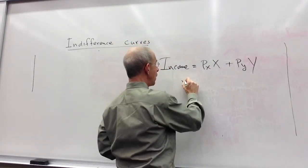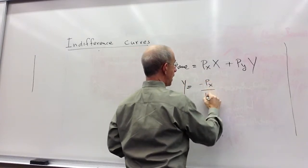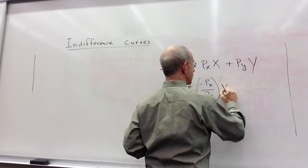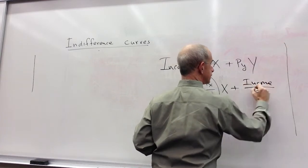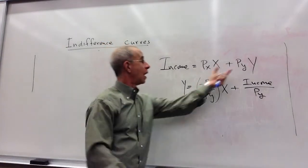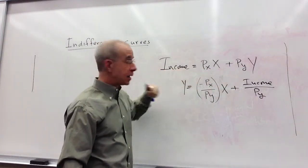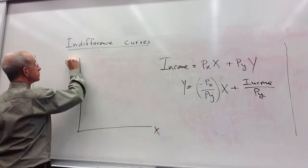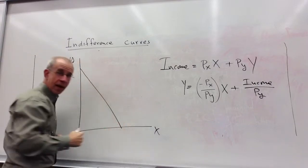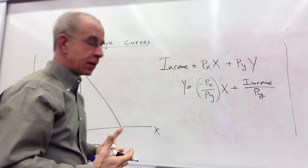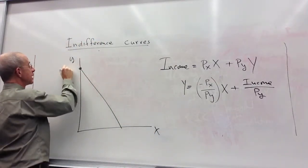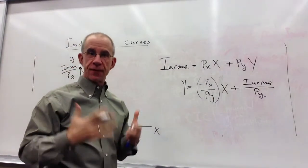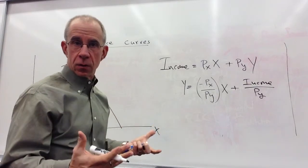I can rewrite this by a little bit of algebra. I've just pulled the price of x over to this side, divided through by the price of y. We have an associated budget constraint for the consumer where this point is the income divided by the price of y. This is the total amount of y that could be purchased if all of the income was spent on good y.